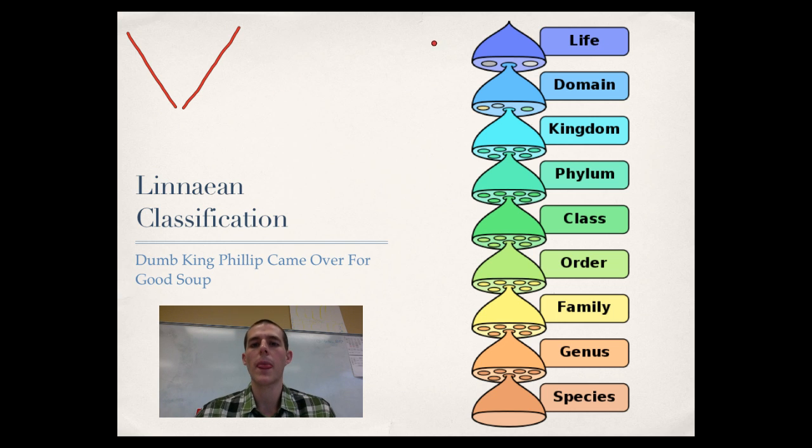Here's this system right here. Life we're not going to worry about because, obviously, we know we are classifying the living world. So these are the ones to worry about. Domain, kingdom, phylum, class, order, family, genus, and species. The way I remember this, little acronym, dumb king Philip came over for good soup. Domain is the biggest, most inclusive. This would be like the top of the funnel right here. You dump all living things on the earth into domain, and then you start sifting them down through the funnel until you get one specific animal down here at the bottom, and that would be at the species level.